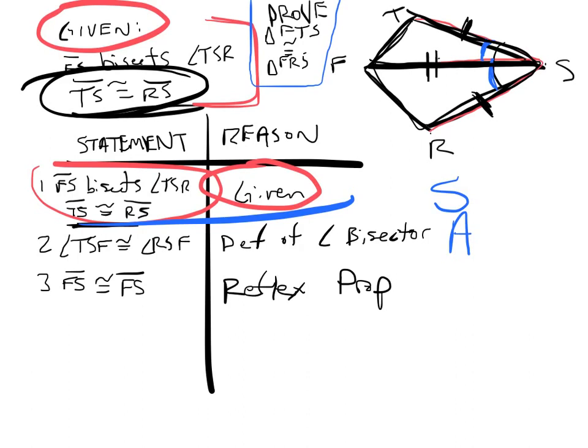So that reflexive property tells us that a side in this triangle is equal to the same side in this triangle. That gives us another side, so that right there shows you what you just proved it with. You don't need to go any further.